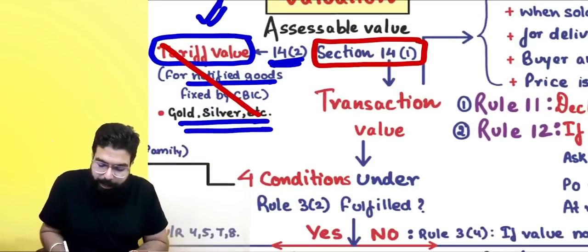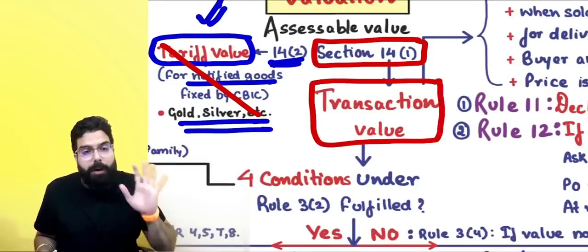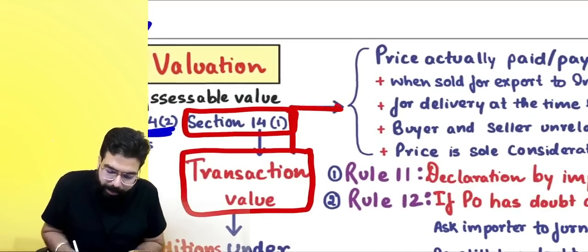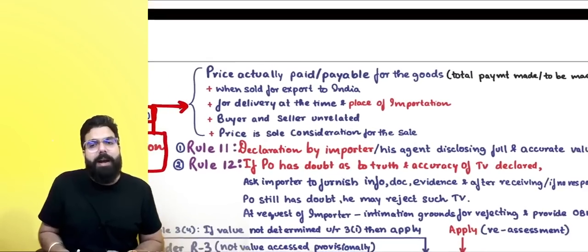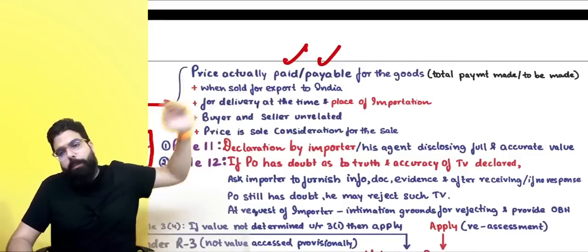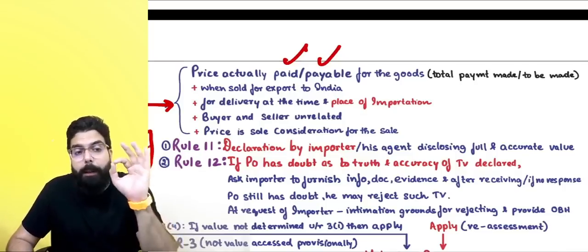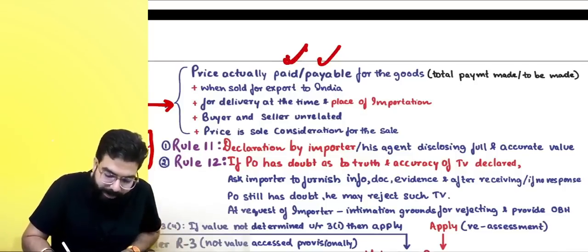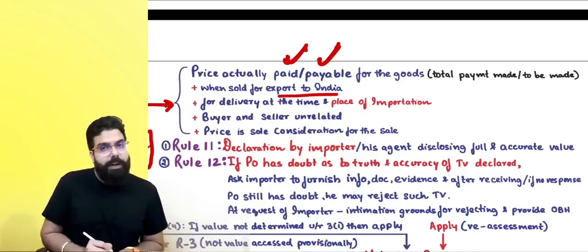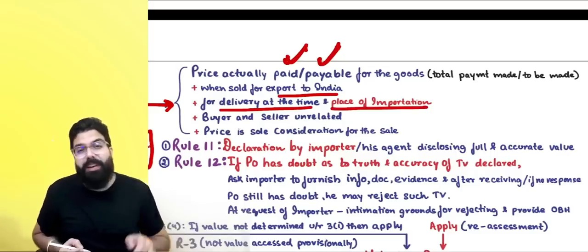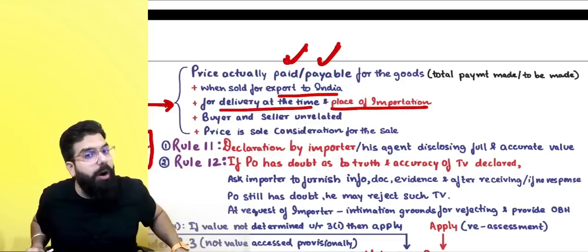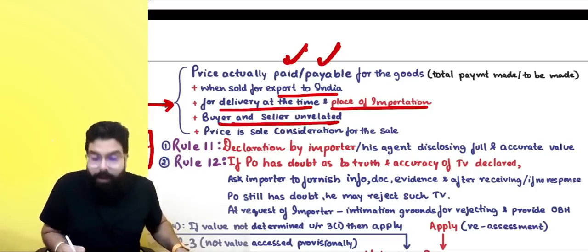If your goods are not notified, Section 14(1) says pay duty on the transaction value. Transaction value means the price paid or payable — the total price which you have paid or will pay to the person. We are learning import valuation. Transaction value applies when goods are sold for export to India, for delivery at the time and place of importation — basically up to the Indian port — when buyer and seller are unrelated and price is the sole consideration.